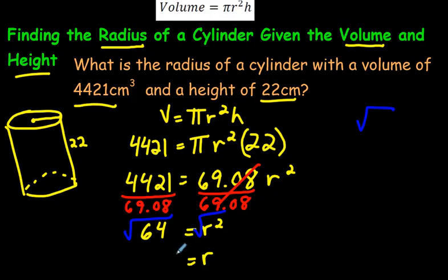But the square root of 64, wow, that actually works really nicely. Because the square root of 64 is 8. 8 times 8 is 64.